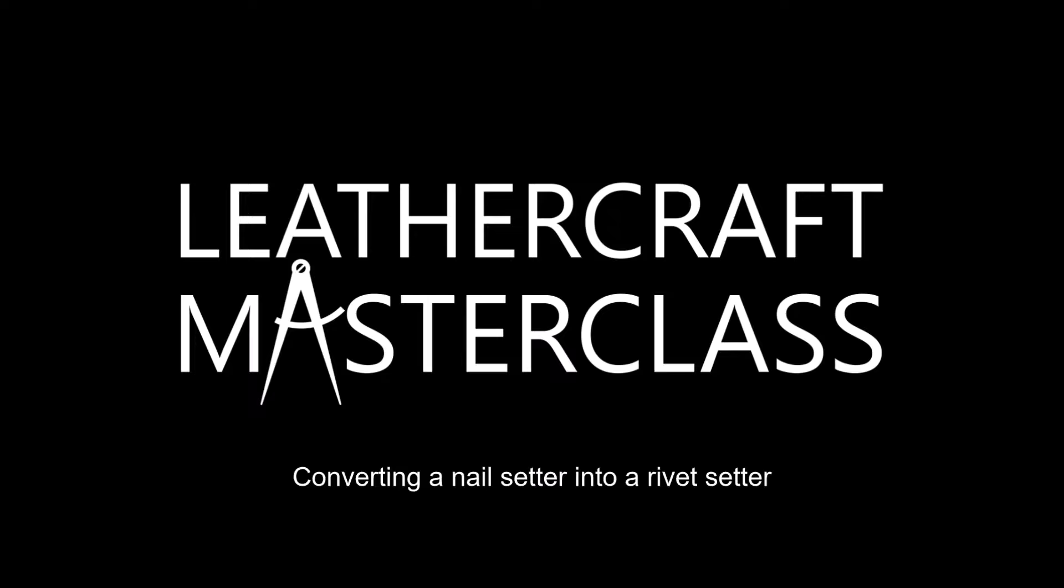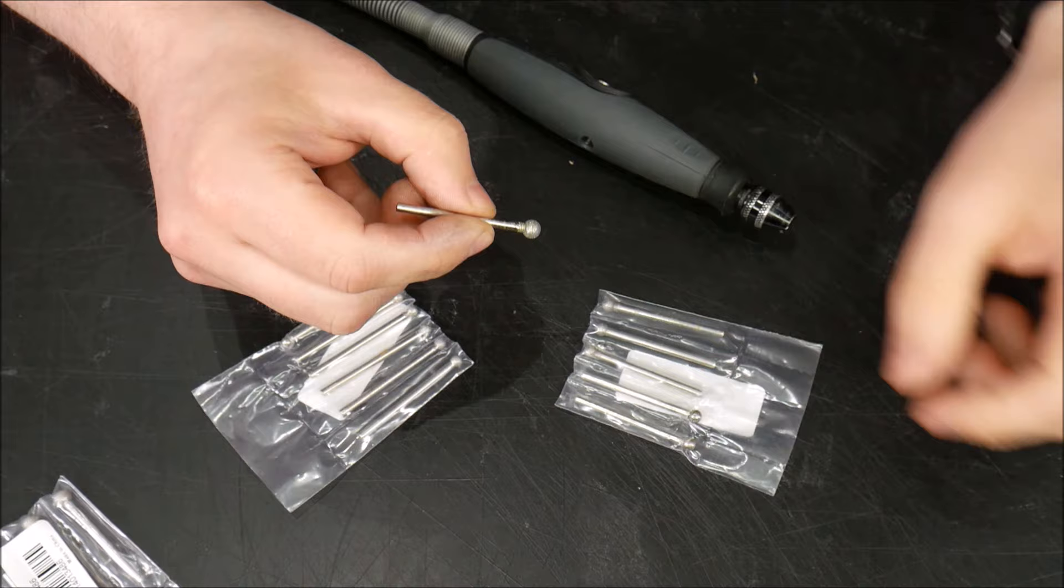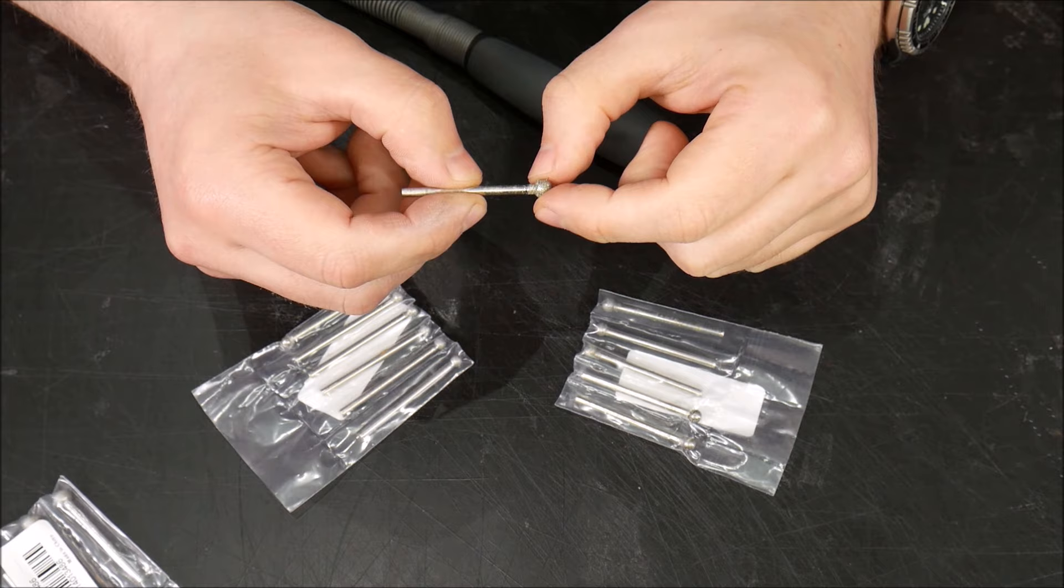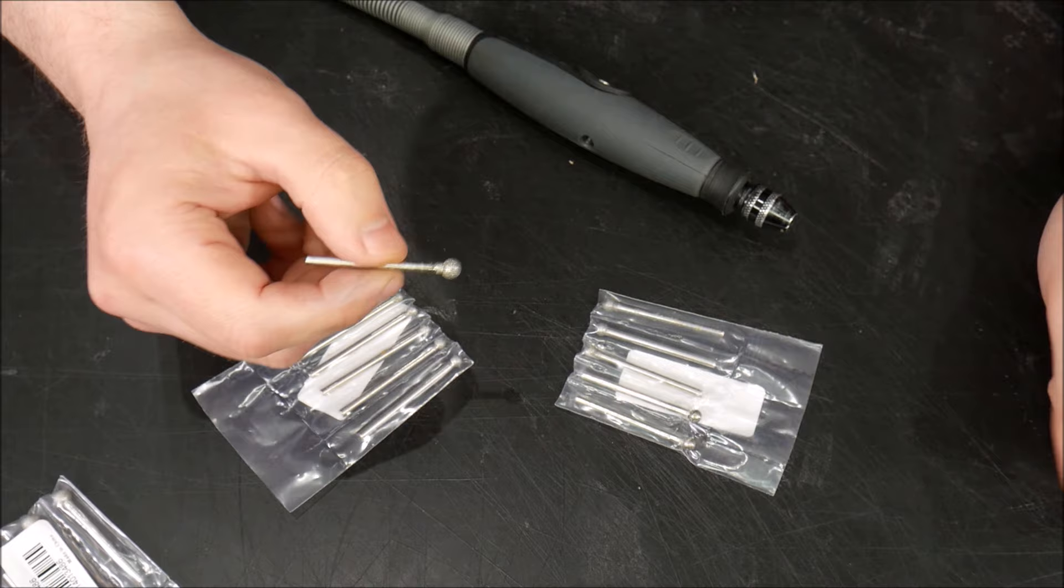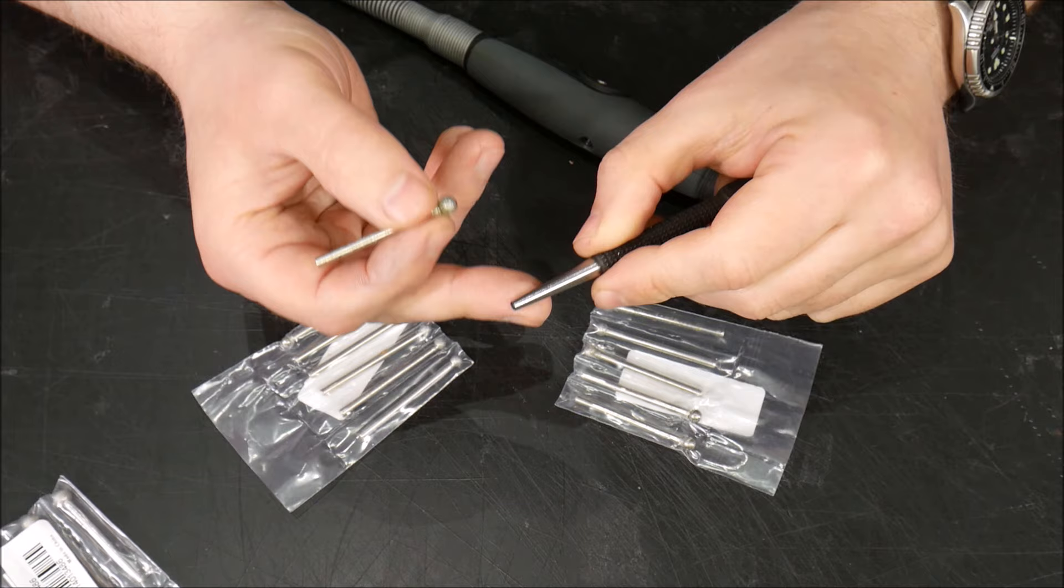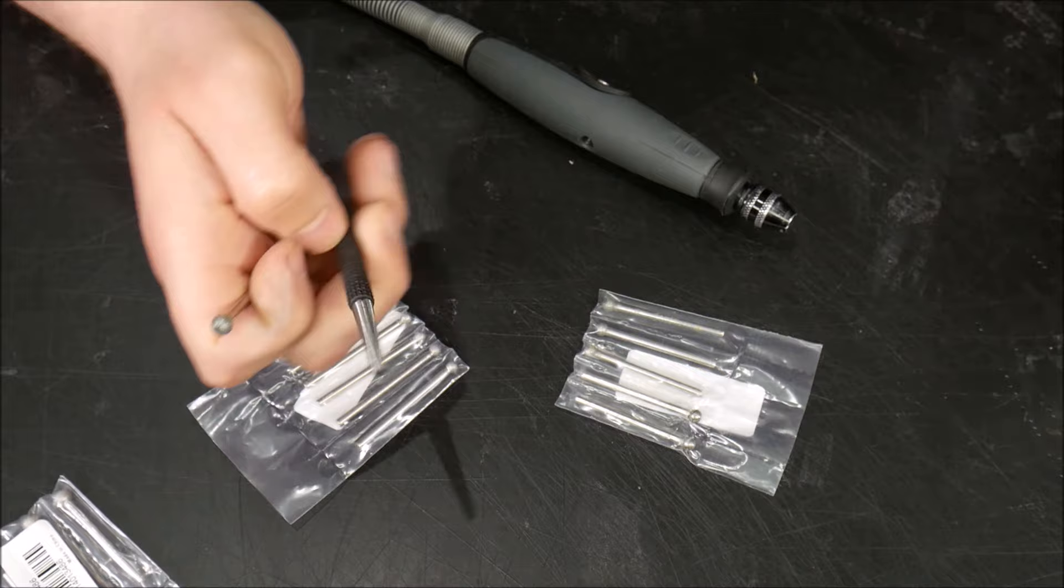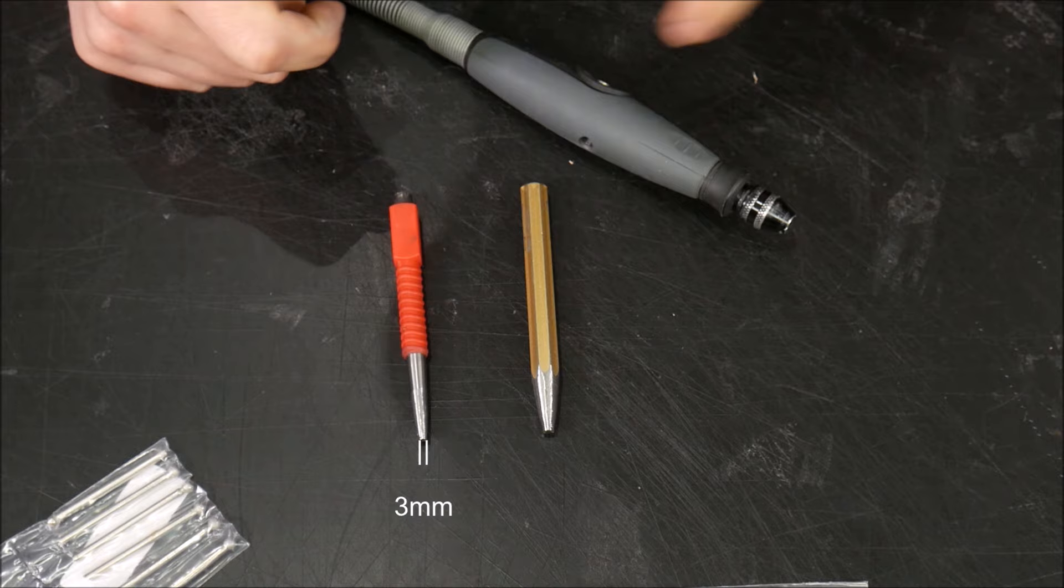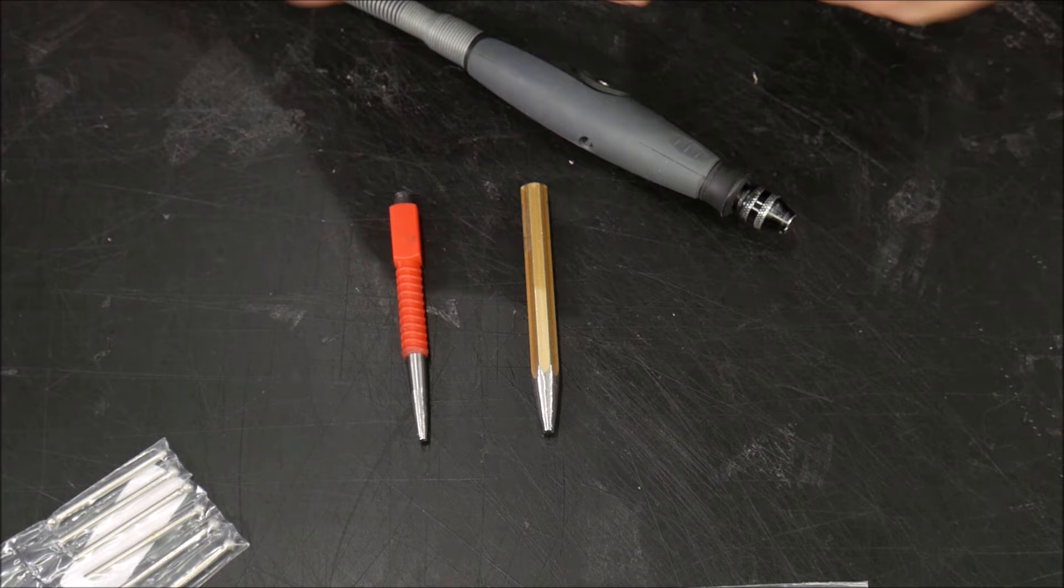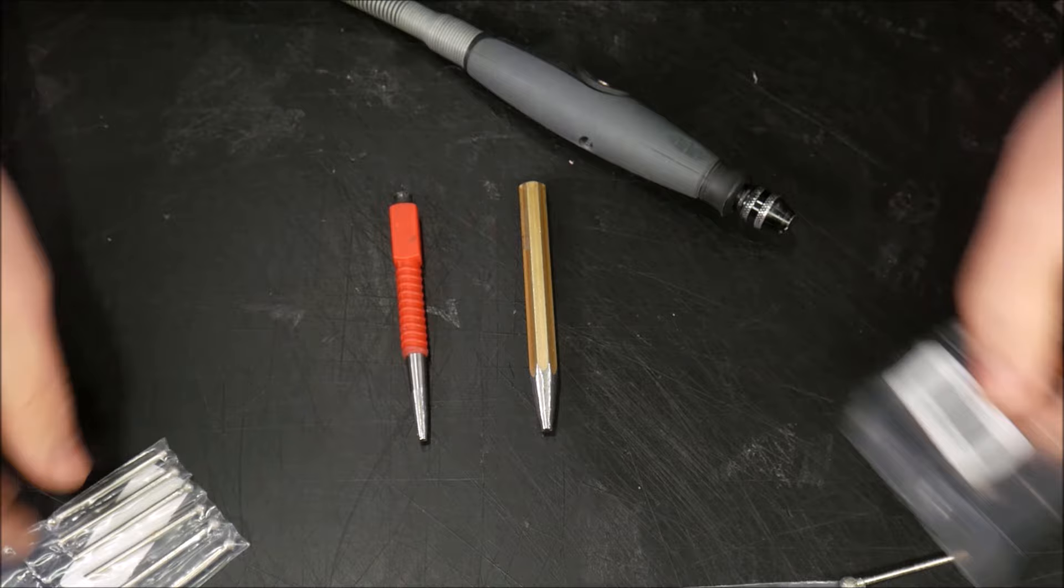What are these? These are diamond burrs. So they're round diamond burrs, and plated to the end where the ball is, is diamond powder, just fine diamond powder. What I'm going to be using this for is to be spinning at high speed, and we're going to uniform the end of the nail setter and begin the first stage of turning it into a rivet setter. This size happens to be 2.5 millimeters. On a 3 millimeter, I like to use a 5 millimeter ball. On a 4 millimeter, I like to use a 6 millimeter ball. So for this 2.5, I think we should be okay with a 4 millimeter ball, which is this one here.